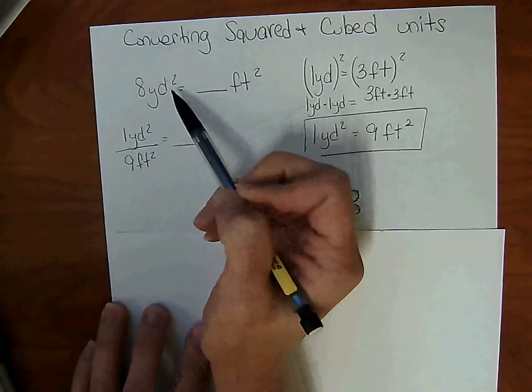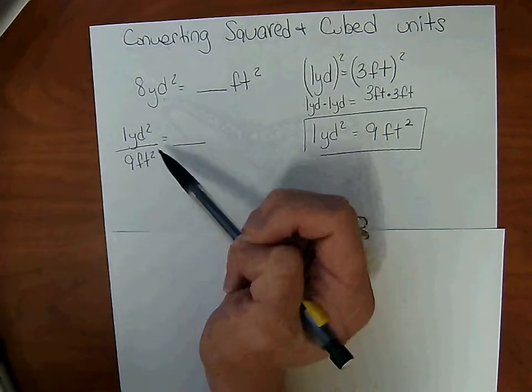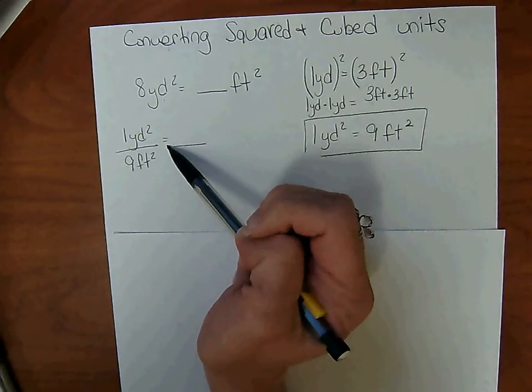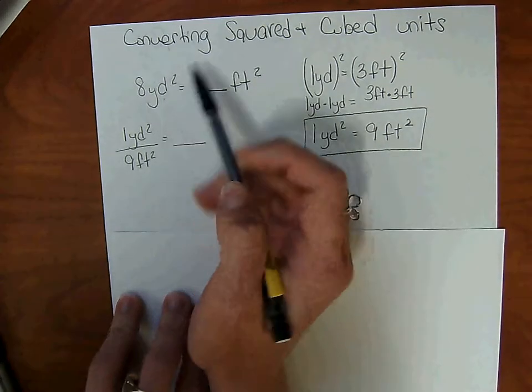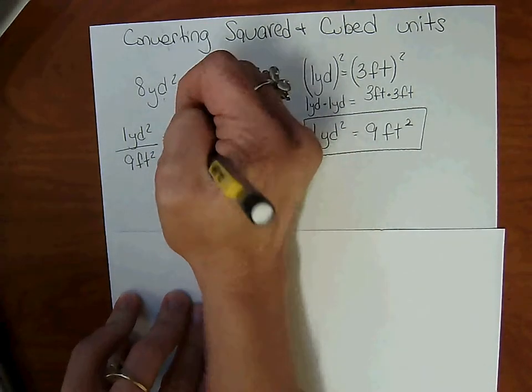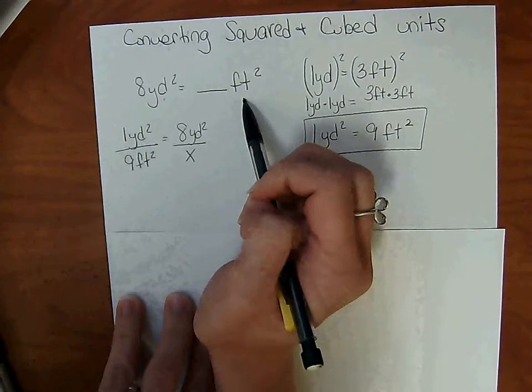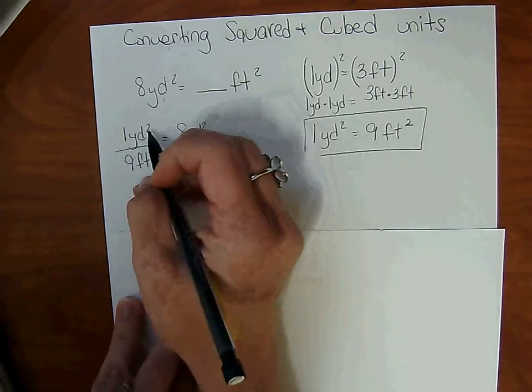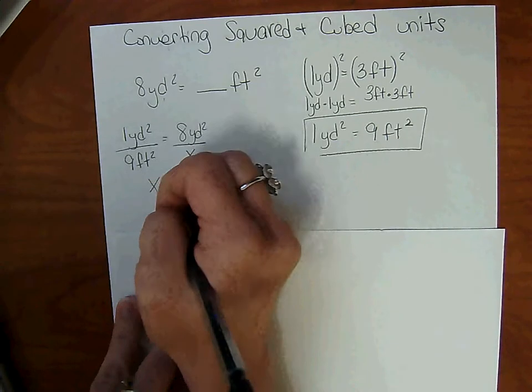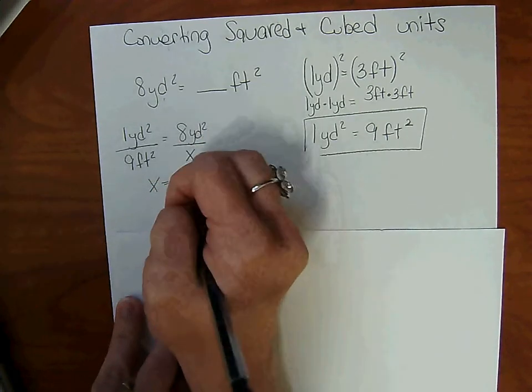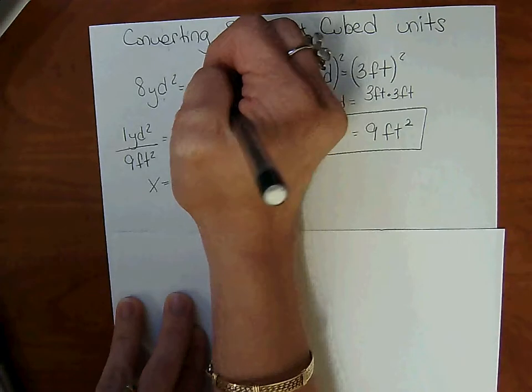We have 8 yards squared. Since there's an equal sign here, we're going to line up the units of measure. So the 8 yards squared is going to go in the numerator, X in the denominator because we don't know how many square feet. Solve the proportion. 1 times X is X, and 8 times 9 is 72. So it's going to be 72 square feet.